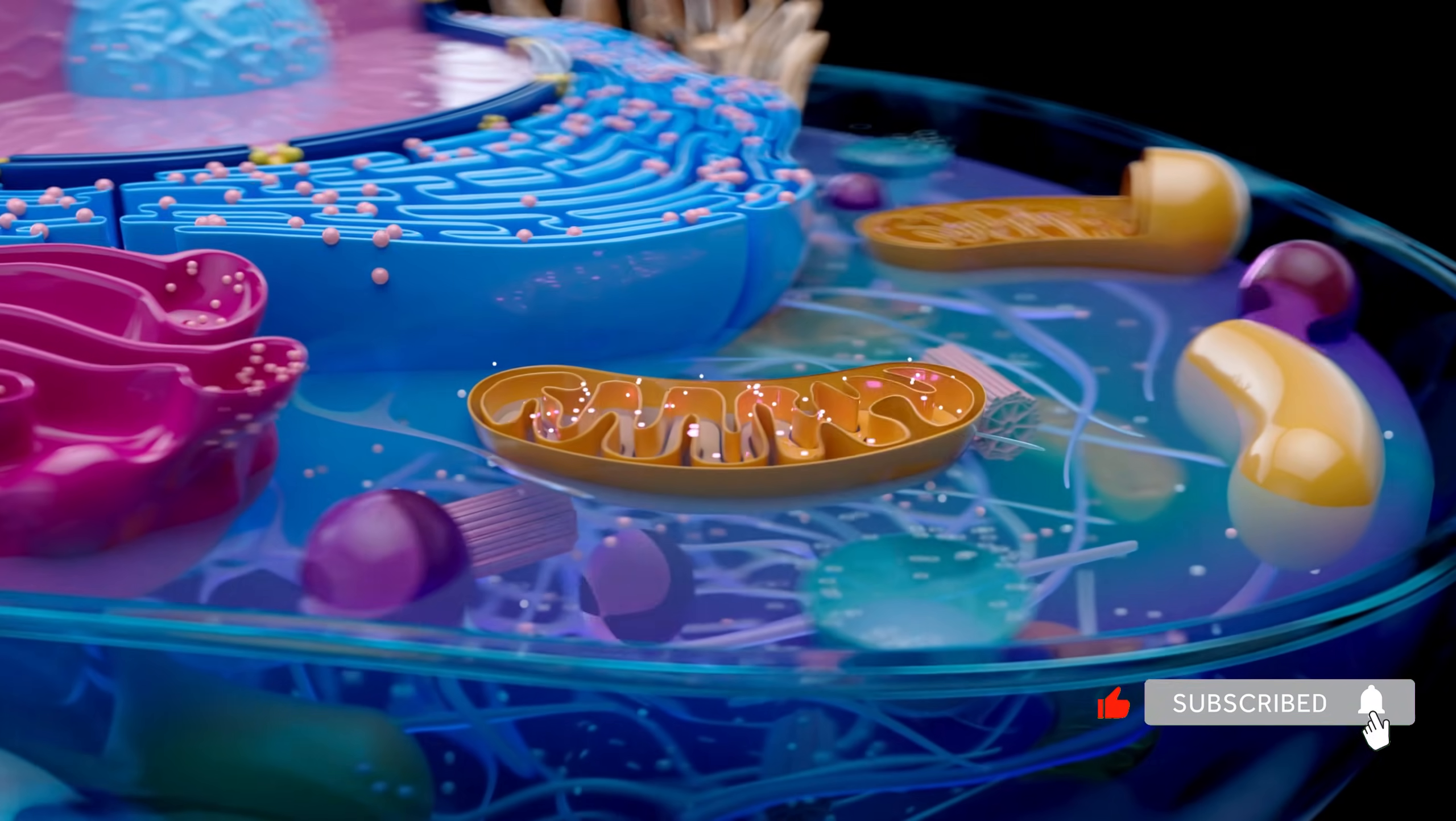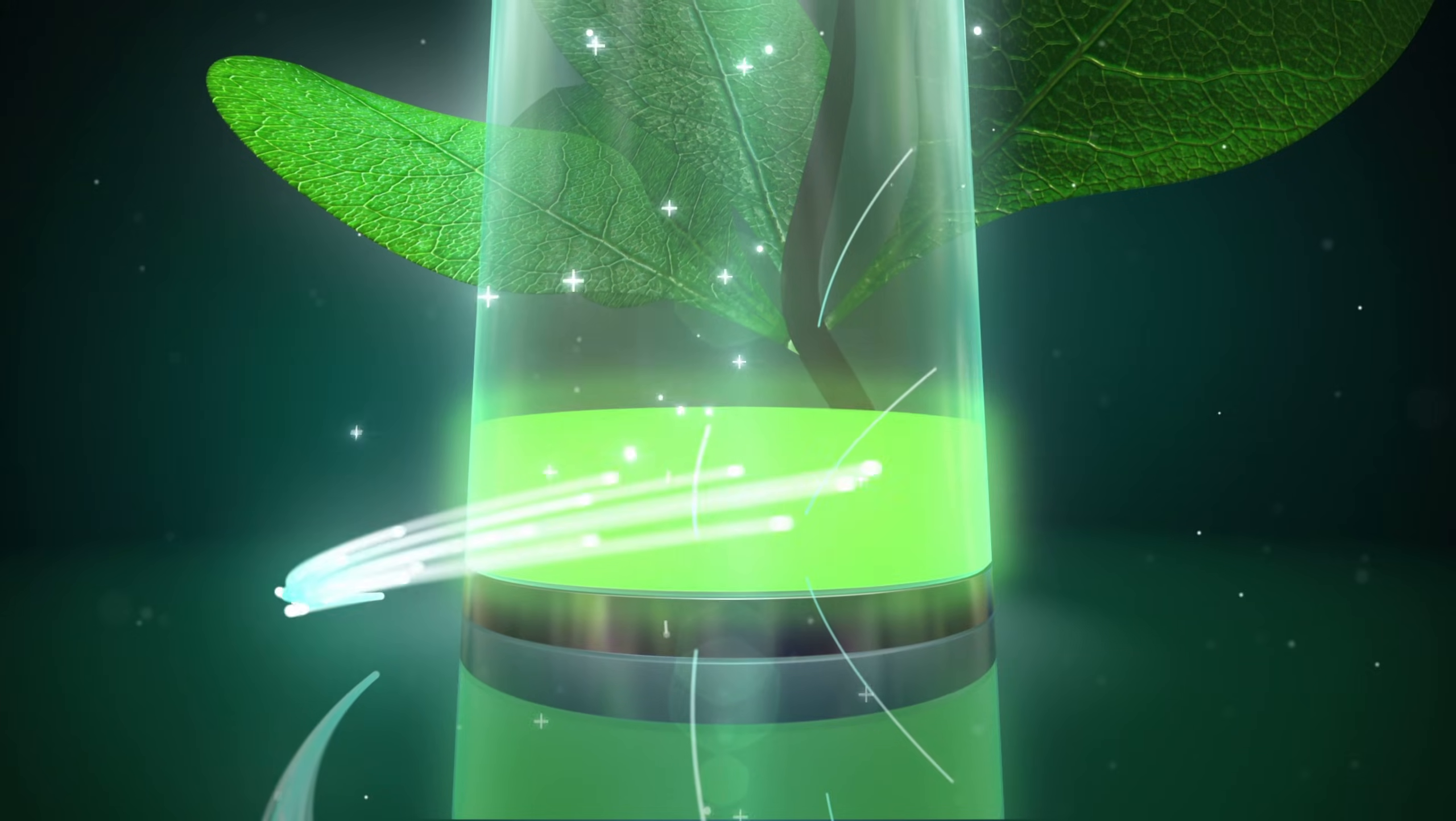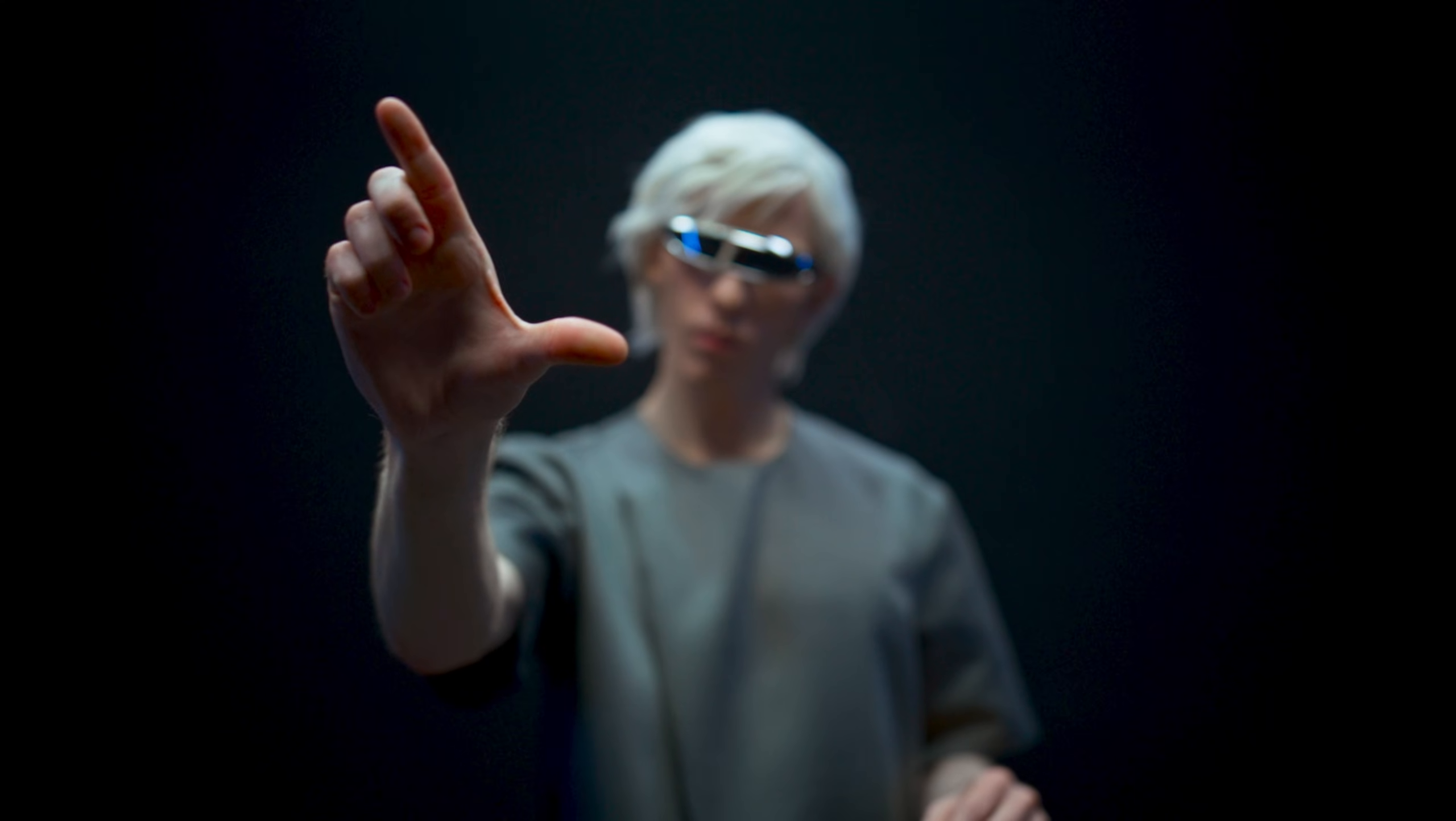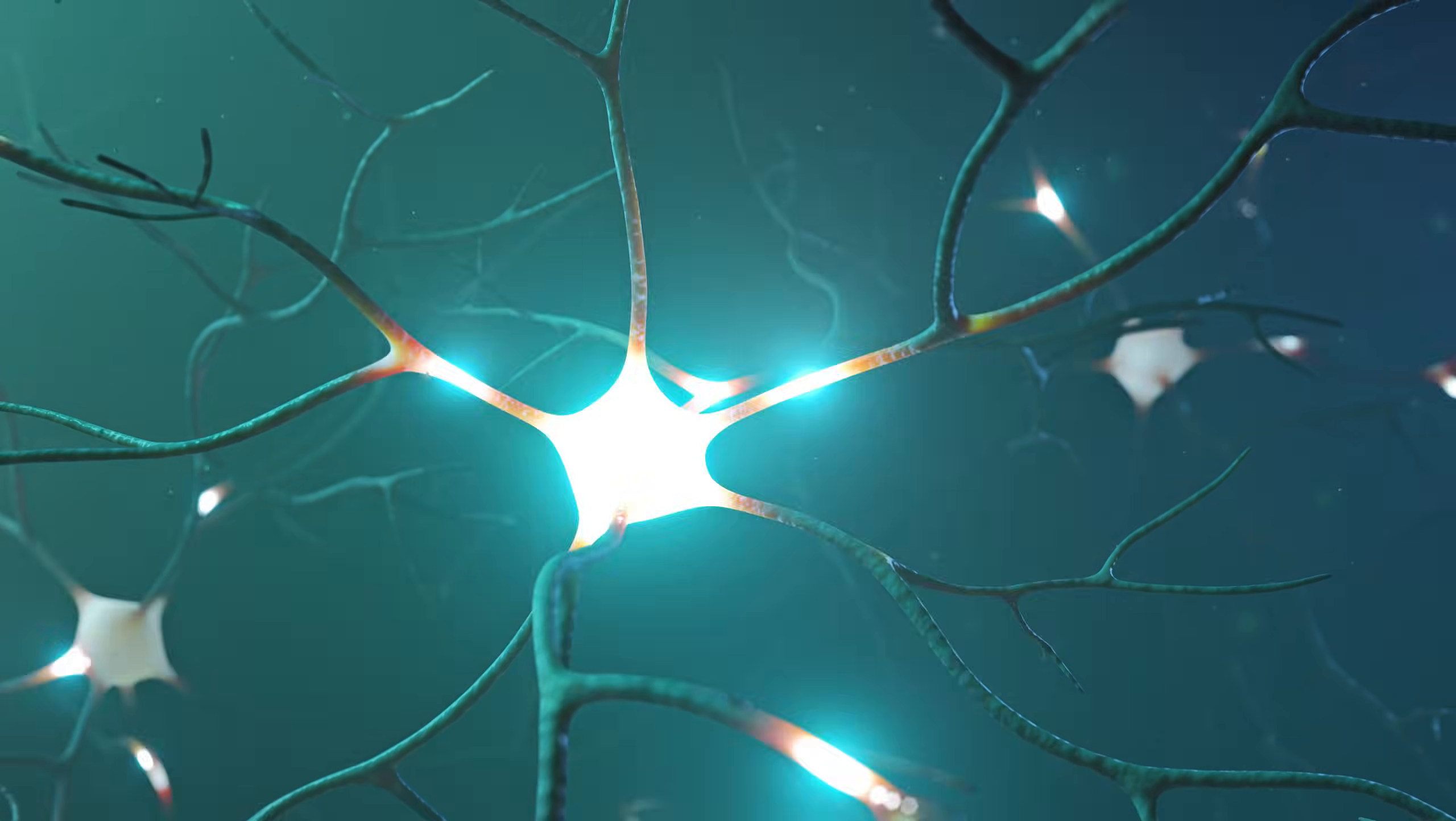The mechanism is photobiomodulation. Red light at 670 nanometers penetrates your skull and activates cytochrome C oxidase in your mitochondria. Within minutes, ATP production surges significantly. You can't see it. You can't feel it. But inside your neurons, energy production explodes.